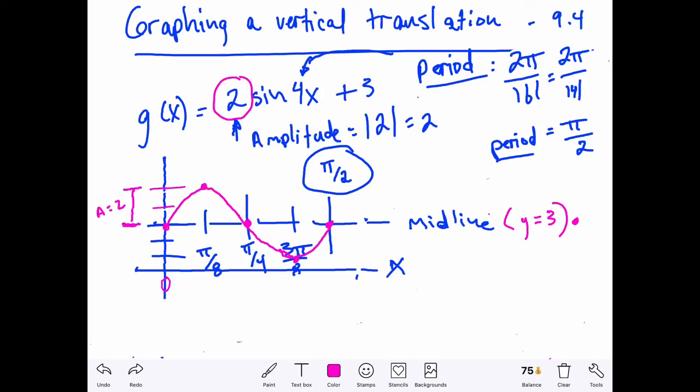And then of course this transformation is a horizontal shrink of one-fourth. Notice instead of our period being two pi, which would really be right out here if I drew it to scale, we shrunk it by a fourth and it's down here to pi halves, which made my period pi halves.